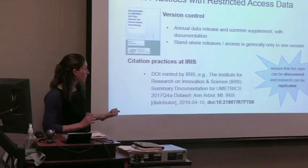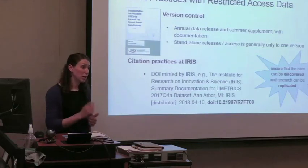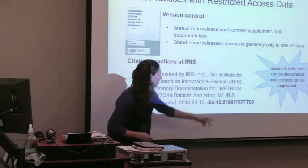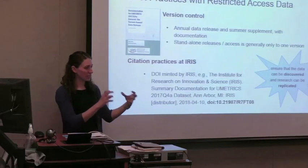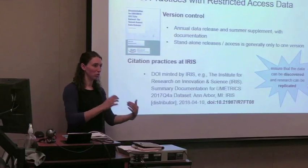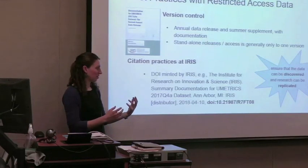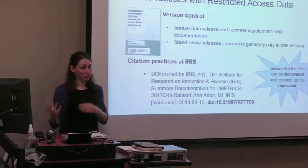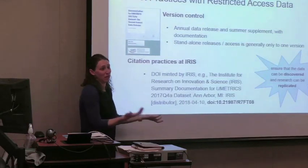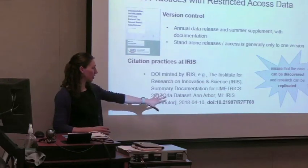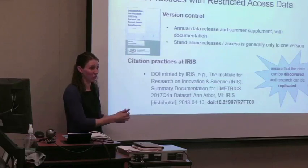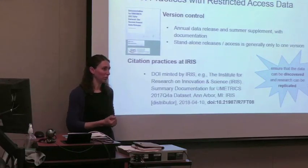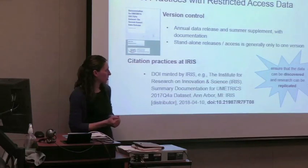One other thing we do at IRIS is mint our own DOIs — digital object identifiers — working through the library with our own handle prefix unique to IRIS. We mint every part of our database every year so that when researchers publish with our data, they can cite back to it. One main issue we're grappling with is how journals that require reviewers to reproduce published results can do so with restricted access data. One way we're addressing this is providing a DOI that links back to our website to explain the data and how to get access. We've also been discussing having specific reviewer-level accounts.